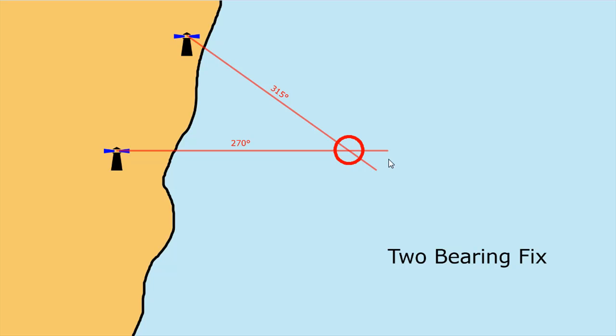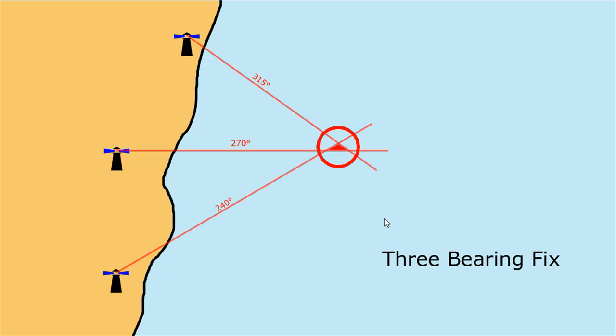If you want to be more accurate, you would take three bearings. A third bearing ensures that the first two are correct and have you in the right area — because if you make a mistake, you could think that you are much closer or much further than you actually are. So we take a third bearing, giving us what's called a three-bearing fix. In this case, the third bearing is 240 degrees down to this lighthouse, and you can see that the three bearings don't exactly intersect — this creates an area known as a cocked hat.